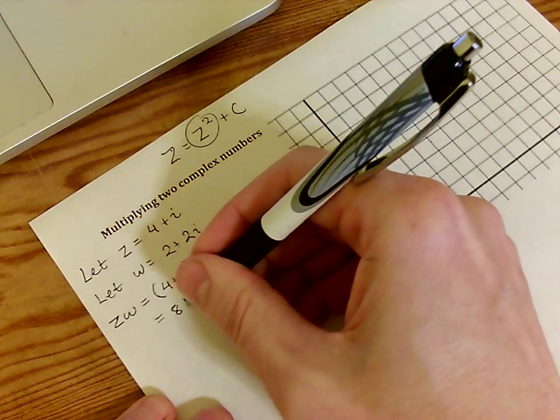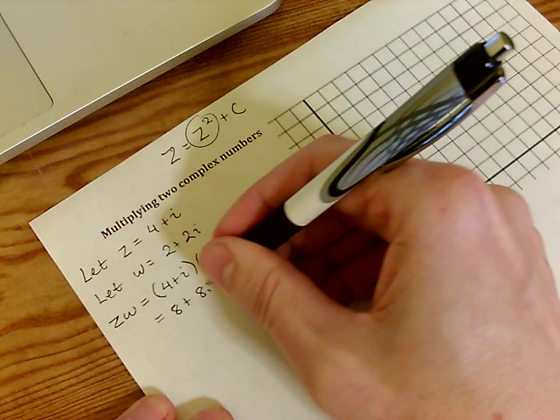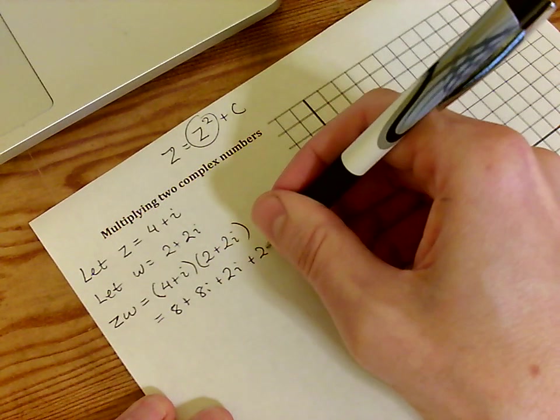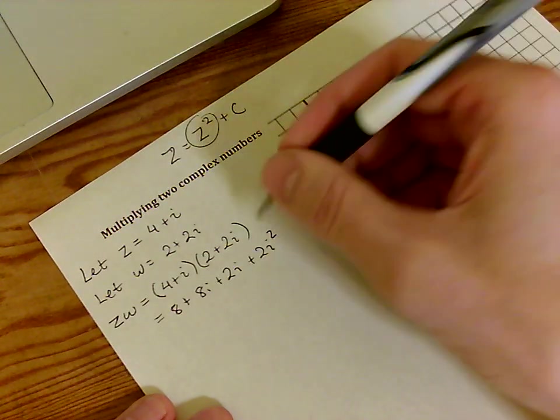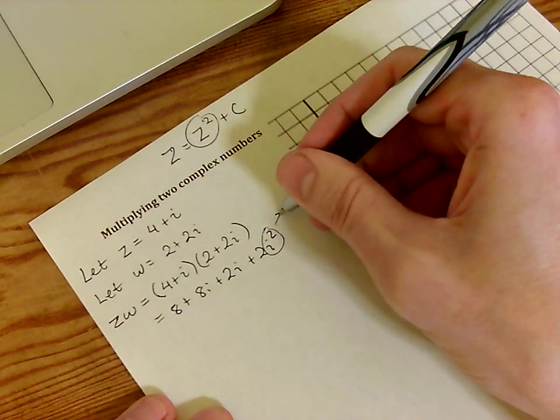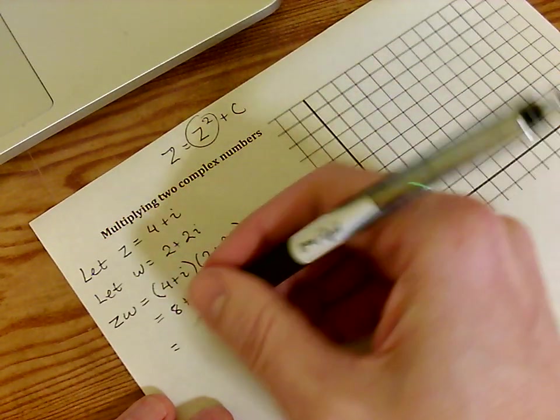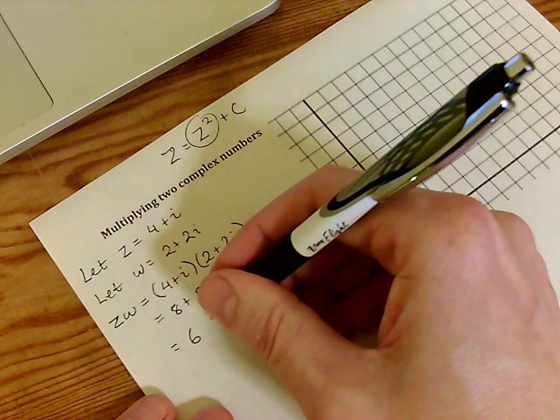So we're going to get 8 plus 8i plus 2i plus 2i squared. Now remember that i squared is equal to negative 1. So we can simplify this as 8 minus 2, which gives us a 6, and then plus 10i.